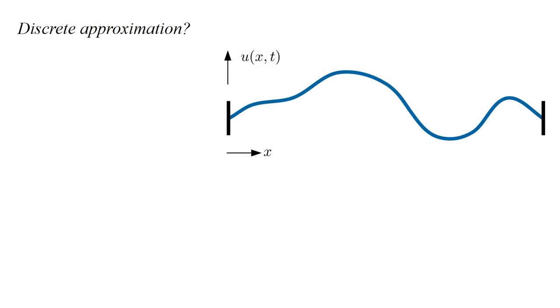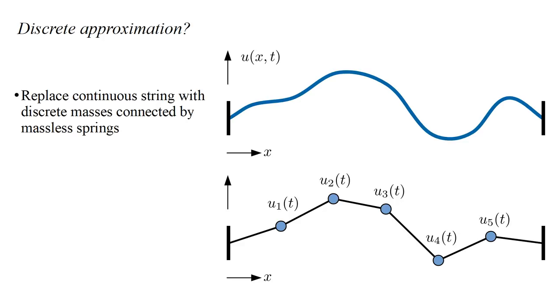One approach is to approximate the continuous system by a discrete one. Let's replace the continuous string with discrete masses connected by massless springs. Conceptually, we think of the string as divided into a number of segments, then collapse all the mass of each segment to a point, and represent the string's elastic properties as massless springs connecting these point masses. With enough masses, this approximation should be very good.